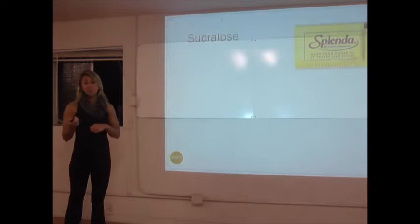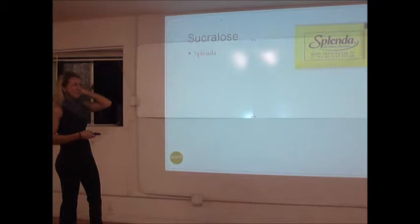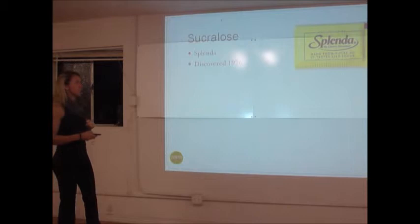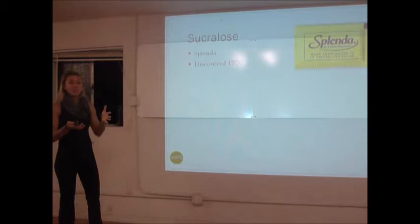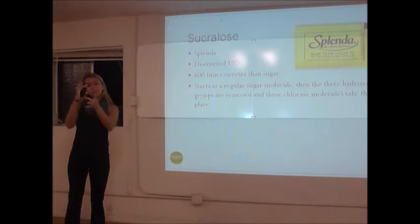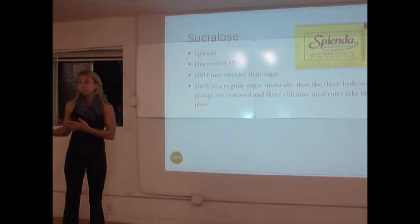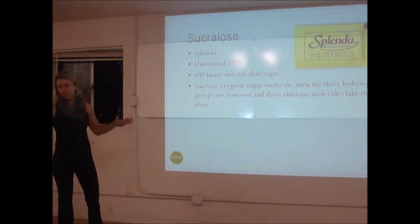Sucralose, or Splenda, is probably one of the most popular sweeteners. It was discovered in 1976, and people like it because it's made from sugar — they start with a sugar molecule and switch out some hydrogen atoms for chlorine atoms, so your body doesn't recognize it as sugar and passes it through without absorbing it. It's 600 times sweeter than sugar, so a Splenda packet is only a tiny fraction of actual sucralose with lots of bulking agents.